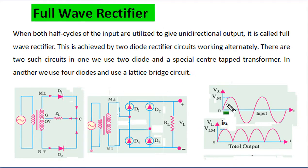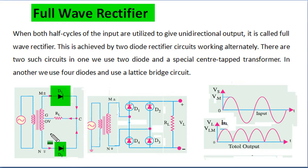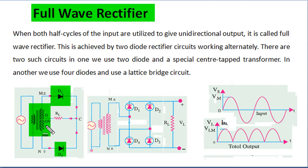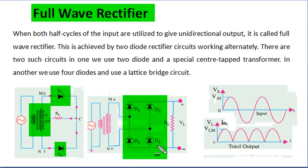Full wave rectifier: when both cycles of the input are utilized to give a unidirectional output, this is a full wave rectifier. We can achieve this with two diodes working alternately, using a center-tapped transformer, where the upper secondary winding produces a positive voltage and the lower winding is 180 degrees phase shifted, producing a negative voltage. There is also another circuit using four diodes in a bridge configuration, known as the bridge rectifier circuit.